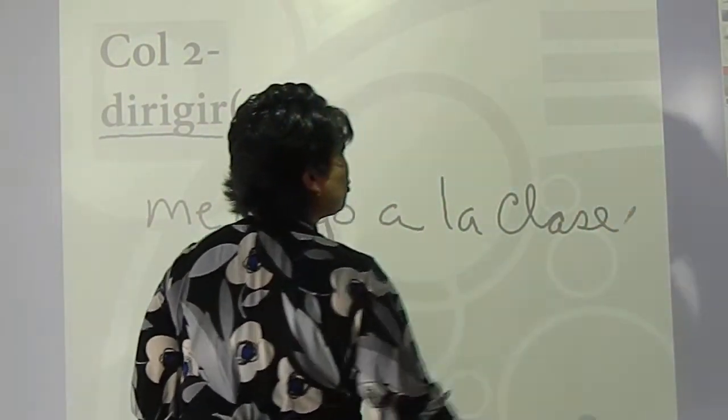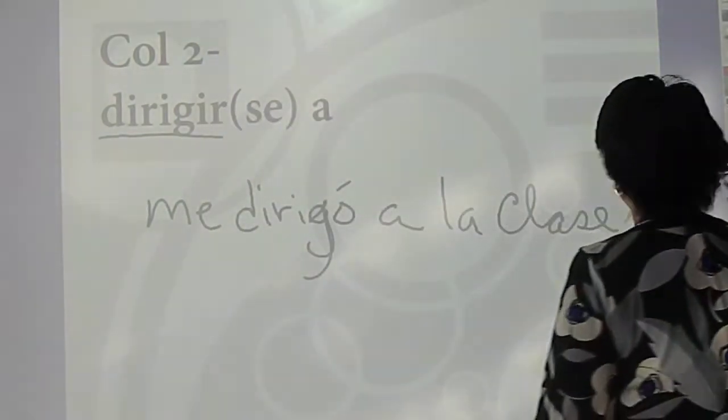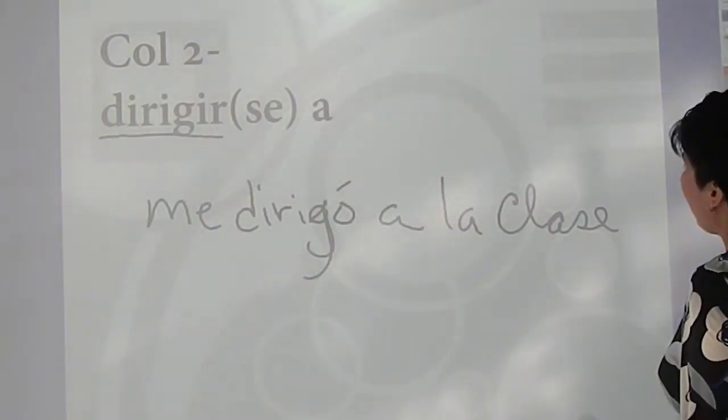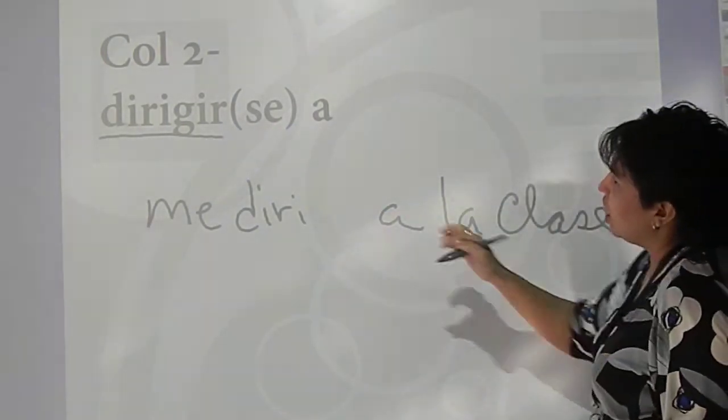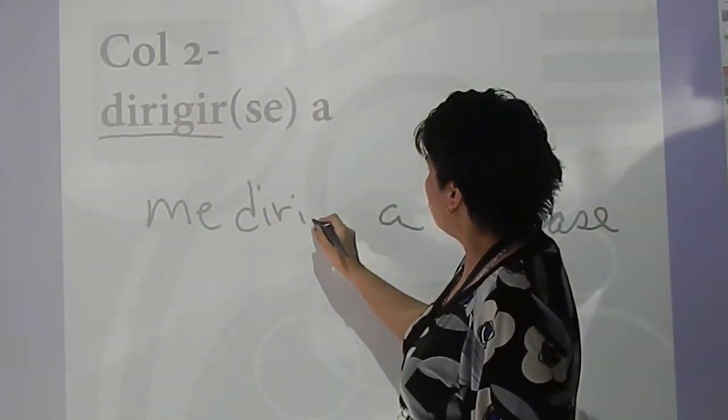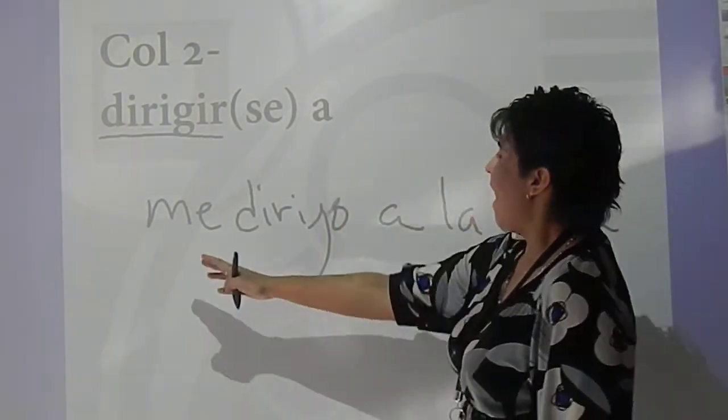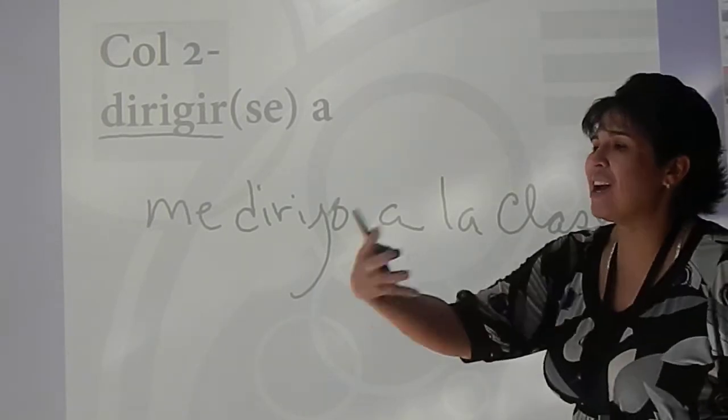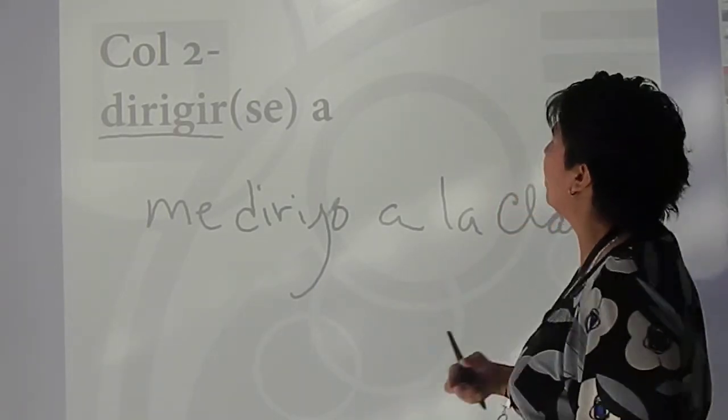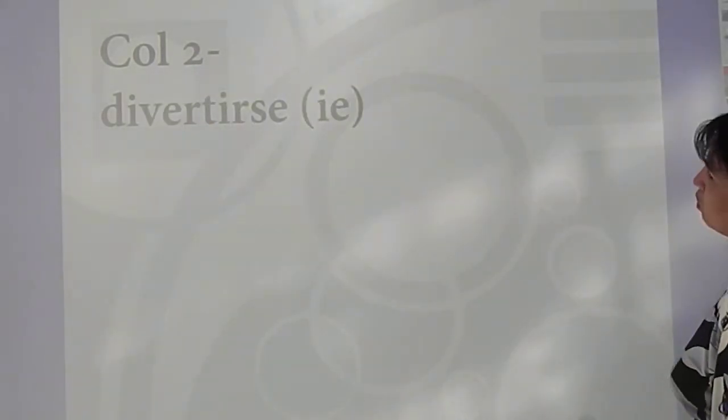I addressed the class. Me dirijo. Let me change this conjugation. It is a G-I-R, so it's dirijo. I addressed the class on a daily basis. So, to address someone, to talk to someone, as in with a speech or whatnot.